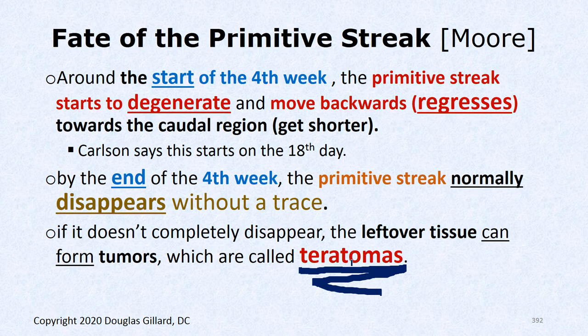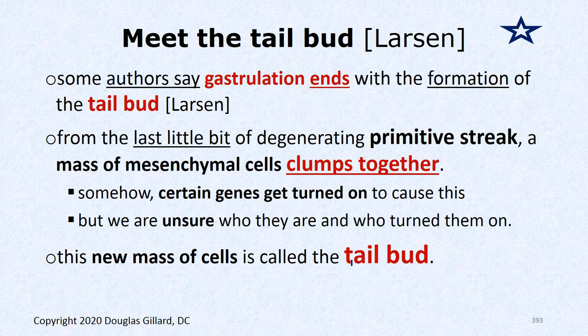Since the primitive streak has the power to give rise to ectoderm, endoderm, and mesoderm, these teratoma tumors can contain endoderm, ectoderm, and mesoderm in various mature forms. Maybe you have skin, hair, teeth, or heart cells in the tumor. They're crazy, crazy tumors.